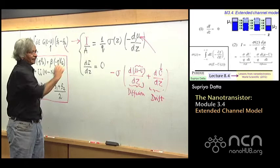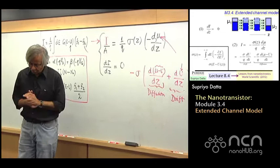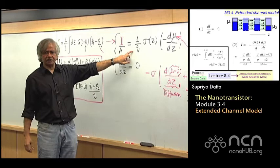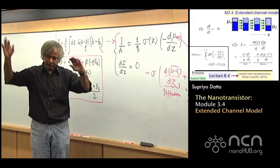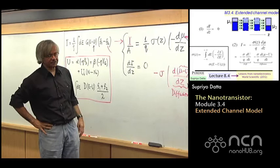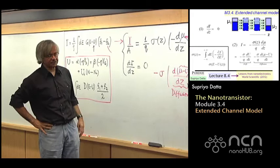So this then would be like the extended channel version — you could get an equation like this from here. But the part that I've glossed over, which is what we'll talk about in the next module, is if you are using this equation, how would you include this interface resistance — which has been at the core of our discussion in the last two weeks. The main new thing we have learned in nanoelectronics is this additional interface resistance that enters into Ohm's law, and how would you modify this equation so that you can include that into our thinking. That's what we'll go into in the next module.